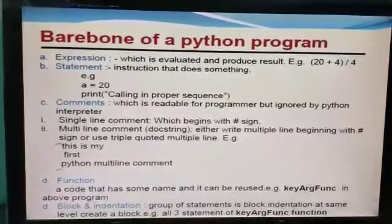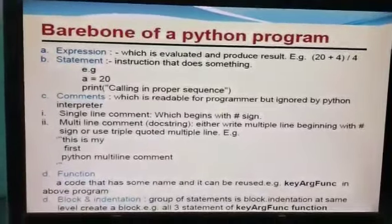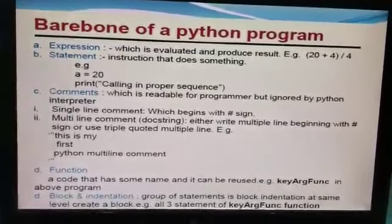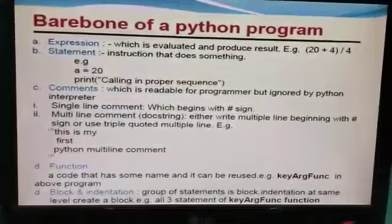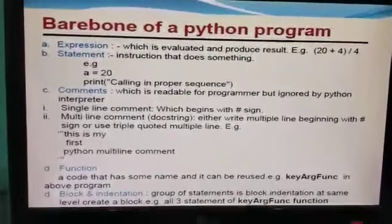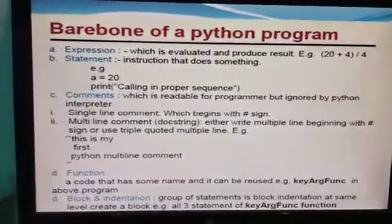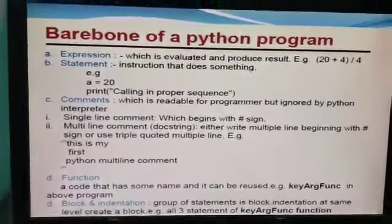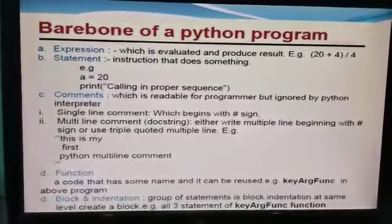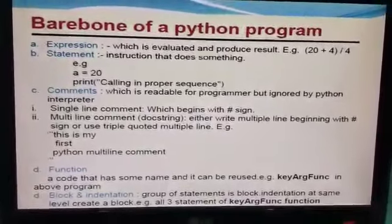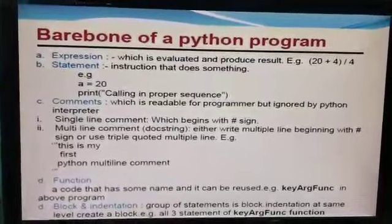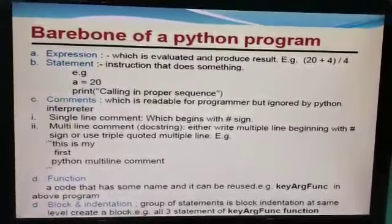Functions — a block of code that has a name and can be reused. For example, the 'key argument function'. We can create a function with our own name, but we need to use the keyword 'def' for creating it. We can use this function every time. When any code needs to be written repeatedly, we can declare that code inside a function.